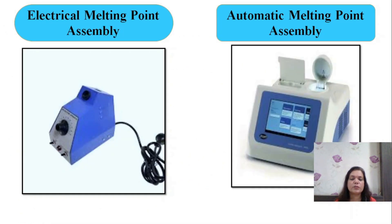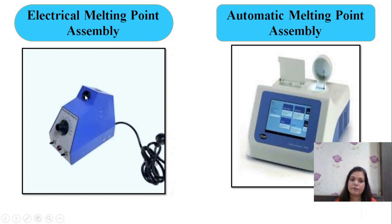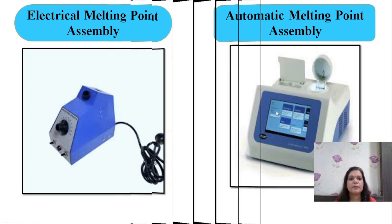These are the assemblies available in the market as an electrical melting point assembly, where you need to load the substance along with the thermometers. You just need to put the capillary along with the substance inside this assembly and apply the temperature at a constant rate. You can find out from the observation hole whether the substance has melted or not. This is an automatic melting point assembly.